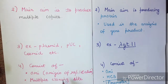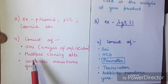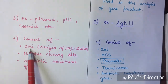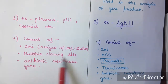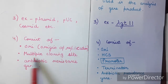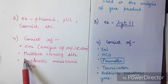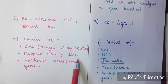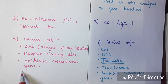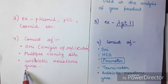The cloning vector consists of an origin of replication, multiple cloning sites — which can be cleaved by many restriction endonuclease enzymes — and an antibiotic resistance gene, which is used to test whether the plasmid has become recombinant or not.